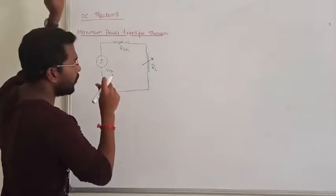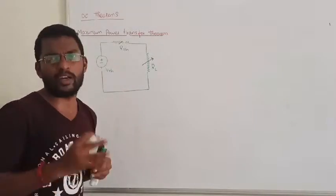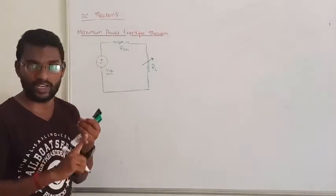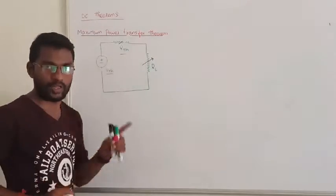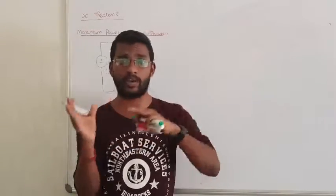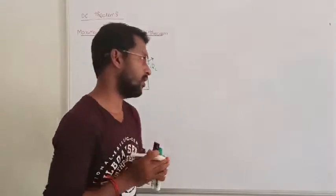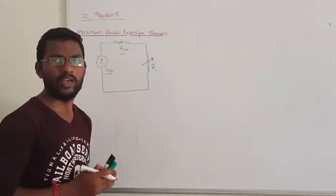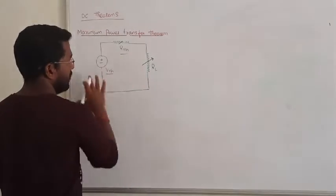Step number one: take your circuit. First, find the value of VTH and RTH, and then reconnect the load with the circuit. Whether you have dependent or independent sources, you can find the values of VTH and RTH. After finding these two values, the load resistance is reconnected with the circuit.